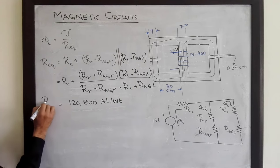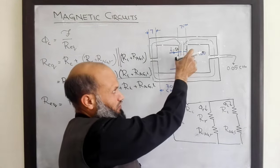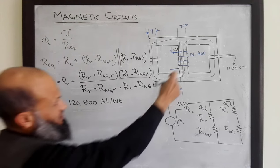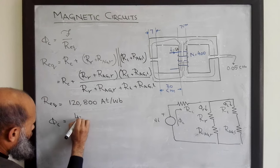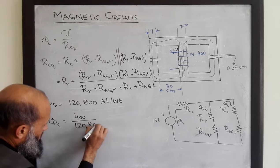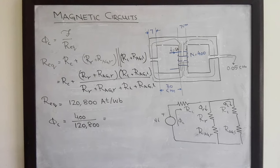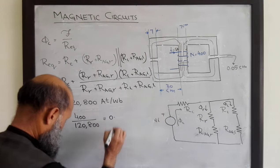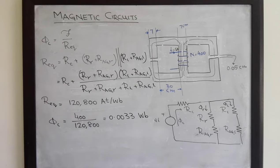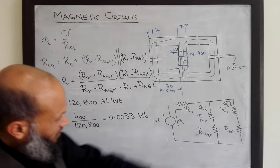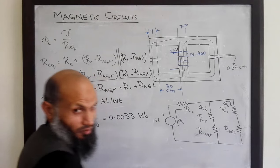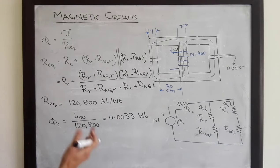Therefore, the total flux in the central limb equals MMF divided by equivalent reluctance. The MMF is 400 turns × 1 ampere = 400 ampere-turns, divided by 120,800, which equals 0.00330 weber. This total flux then splits into the two parallel paths. To find the flux in each outer limb, we apply the current divider rule.